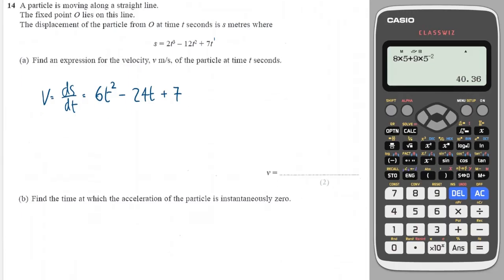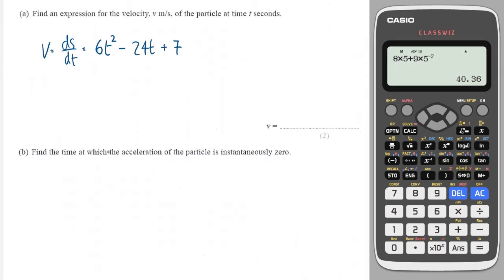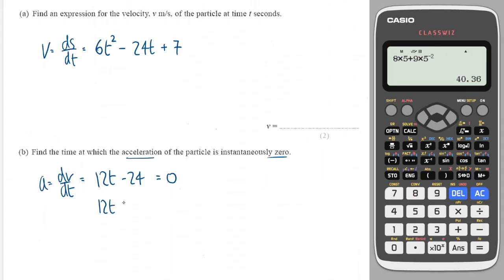So that's the velocity, and then it's asking us to work out the acceleration and the time at which the acceleration is 0. Differentiating the velocity gives 12t minus 24. We want to find when the acceleration is 0, so setting it equal to 0, adding 24 to both sides and dividing by 12 gives t equals 2.